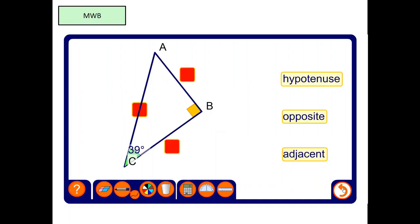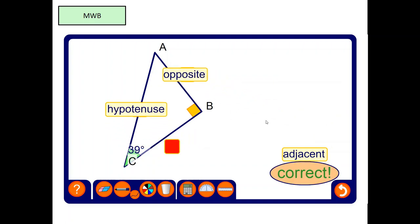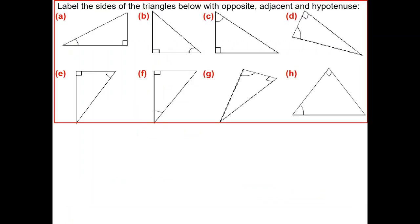What I would like you to do is pause the video and have a go at this question. So, what you should have got: hypotenuse there, opposite over there, and finally, adjacent there. These are the answers you should have got. Can you self-assess?